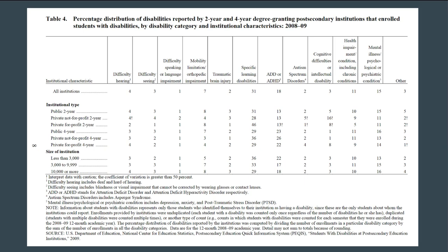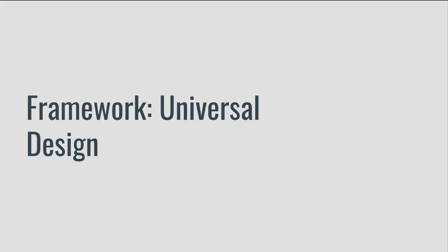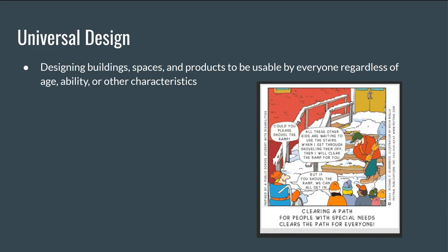When we're designing our instruction, keeping physically disabled and neurodivergent learners in mind is crucial for creating an environment that allows all students to succeed. This is why I feel our teaching should be grounded in the philosophy of universal design. The idea of universal design began with architecture in the 1980s, and aims to make buildings, spaces, and products usable by everyone, regardless of age, ability, or other characteristics. In the late 1990s, the Center for Universal Design at North Carolina State University created seven principles of universal design.